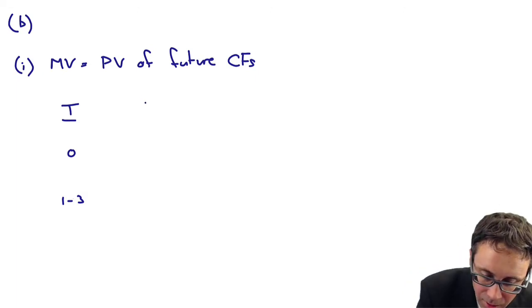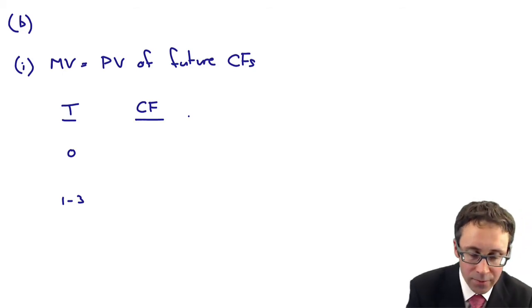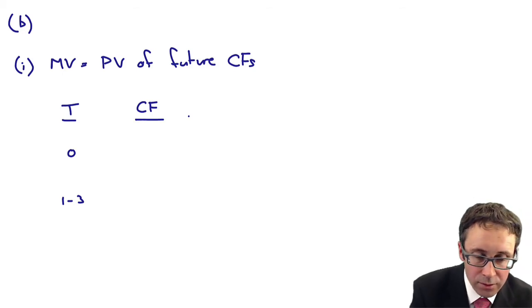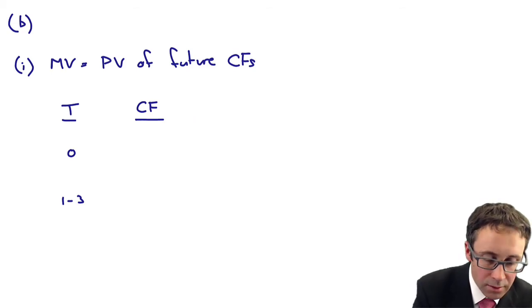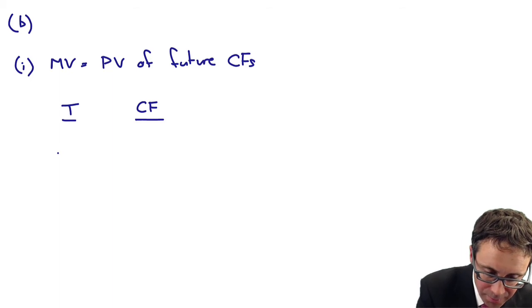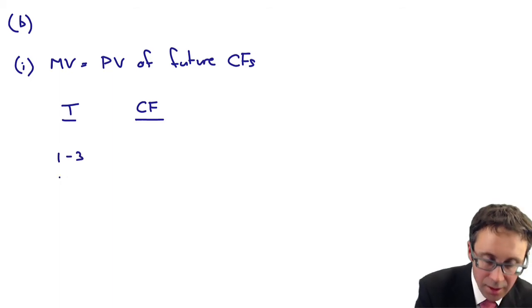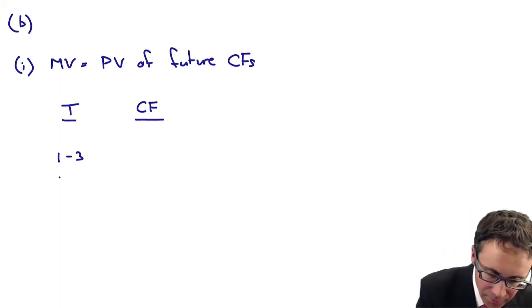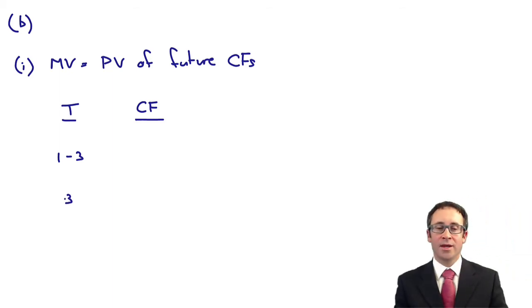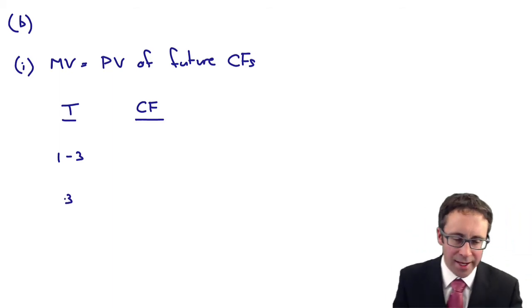So the market value is the present value of the future cash flows. We need to look at the time period. So today, and then for the next three years. So at the end of 16, we will get the coupon interest in 17, 18 and 19. Three years time.